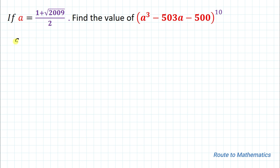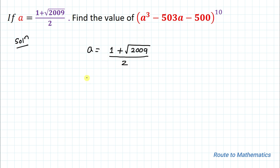We have the value of a: a = (1 + √2009) / 2. Our first step is to simplify this value of a so that our calculation becomes a bit simpler. We take the 2 to the other side by cross-multiplying, so we get 2a = 1 + √2009.